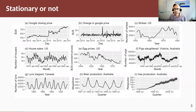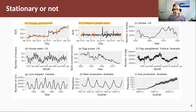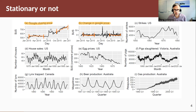Here are some examples of time series we can consider — whether they are stationary or non-stationary. The first two are the Google closing price over 2015 and the change in the Google price over the same period. The first diagram shows trending behavior in the second part of the graph, typical of financial data with wandering behavior. When we look at the change in the Google price, this looks stationary — any window across this series gives the same histogram.